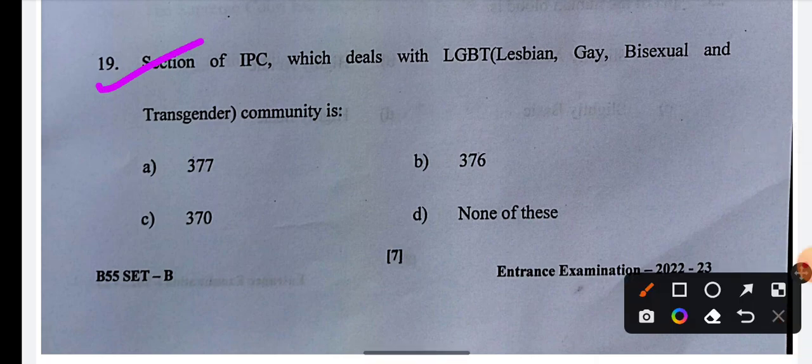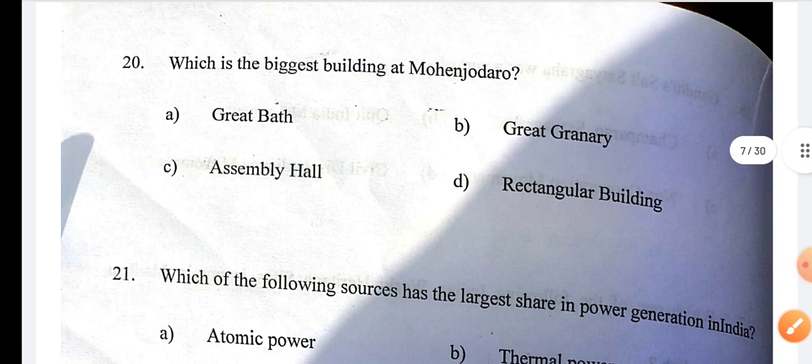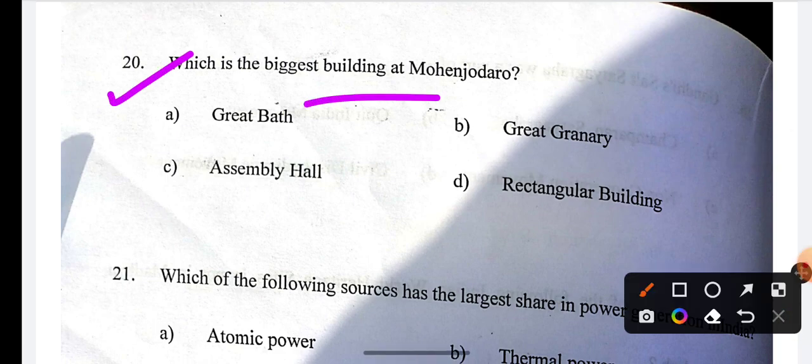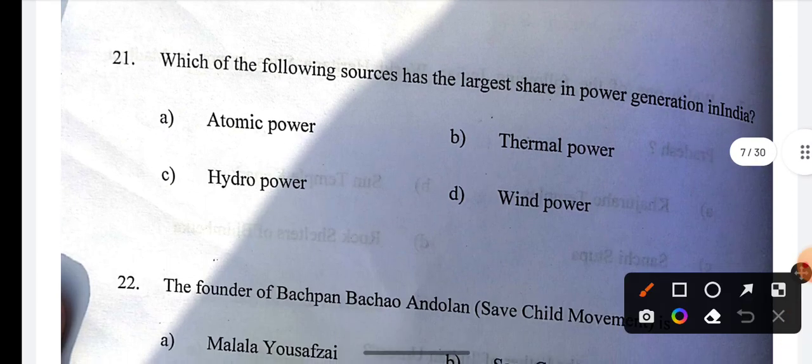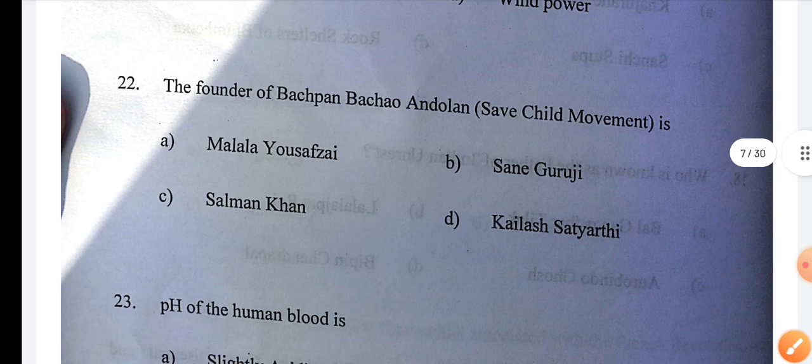Next question: Which section of IPC deals with LGBT community? Question 19, the answer is A. Which is the biggest building at Mohenjodaro? Question 20, the answer is Great Granary. Next: Which of the following sources has the largest share in power generation in India? Question 21, the answer is Thermal power.